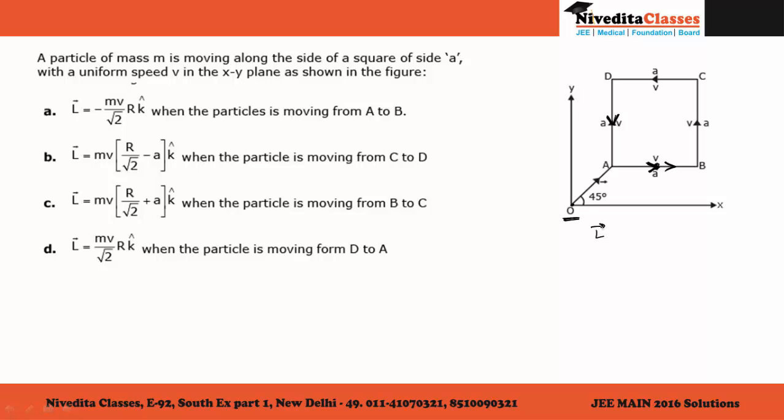We should remember that angular momentum is given by R vector cross Mv vector. Here, the distance from O to A is given by R vector.